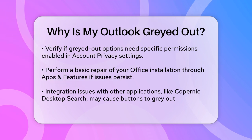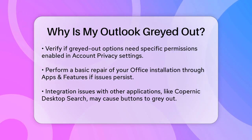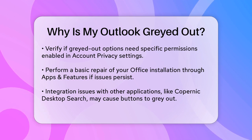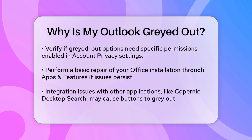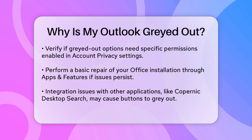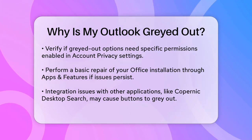If none of these steps work, you might need to perform a basic repair of your Office installation. Go to Apps and Features, select your Office version, and choose Modify > Repair. This can sometimes fix issues that are causing the buttons to be grayed out.